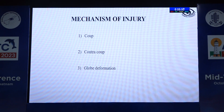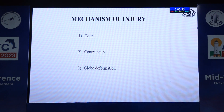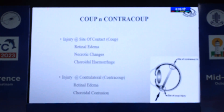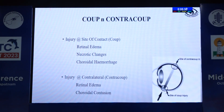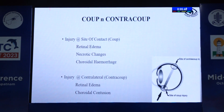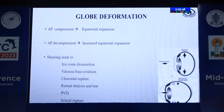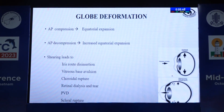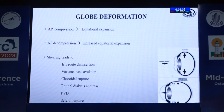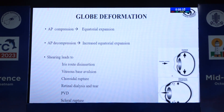The mechanism of injury involves coup, contrecoup, and globe deformation. At the coup it is the site of impact; in the contralateral it is the contrecoup. Most important is globe deformation, caused by anteroposterior compression and decompression, which leads to disinsertion of the iris root, vitreous base avulsion, choroidal rupture, PVD changes, and scleral rupture.